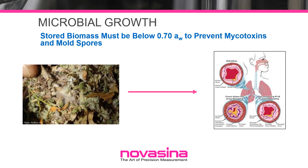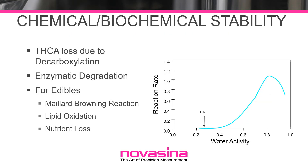Consequently, the water activity of any harvested biomass being stored or transported needs to be below 0.7, meaning water activity testing needs to begin at the cultivator and processor level. If cannabis biomass and edibles are processed to water activities less than 0.7, microbial spoilage is no longer the most likely mode of failure. However, products in this range do not have unlimited shelf life. In the 0.4 to 0.7 range, chemical degradation is a strong candidate because reaction rates are at a maximum. Chemical reactions such as Maillard browning, lipid oxidation, and enzymatic reactions can affect the taste, appearance, and nutritional value of biomass or edibles. For cannabis biomass, the reaction most likely to impact quality is THCA loss due to decarboxylation, which will reduce its potency.